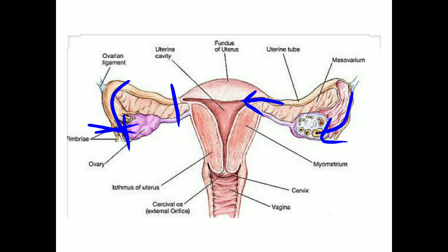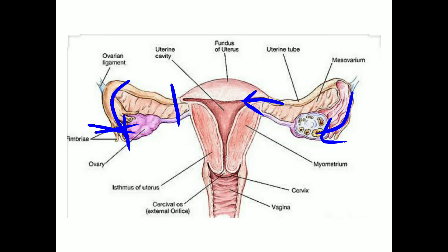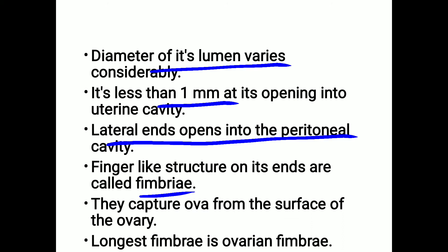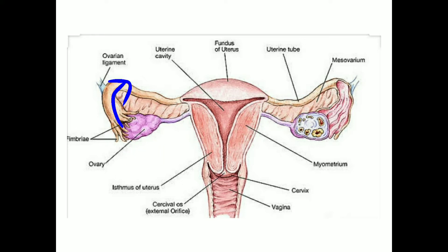The lateral ends of the uterine tubes open into the peritoneal cavity. There are finger-like structures on these ends called fimbriae. Their function is to capture the ovum released by the ovary and move it into the fallopian tube.